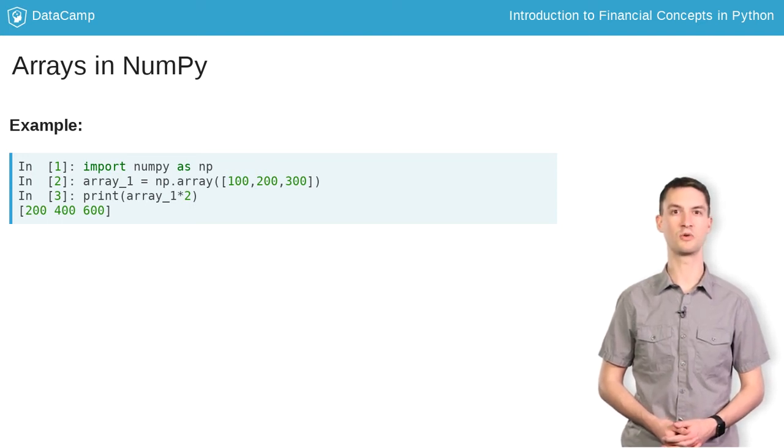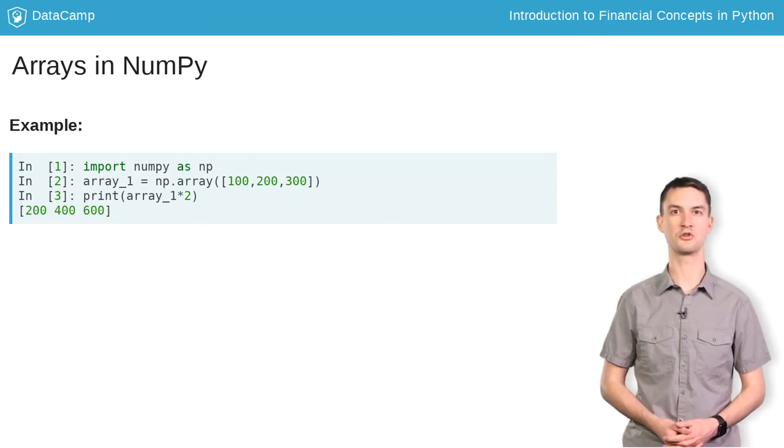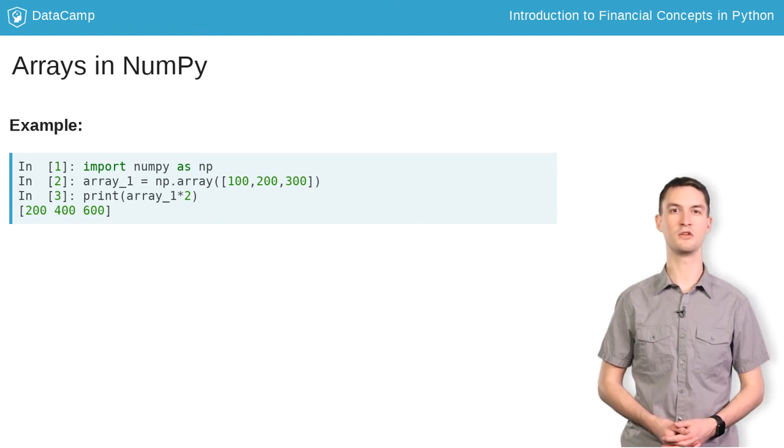In this example, we create a NumPy array object called array1 by first passing in a list of the values 100, 200, and 300. You can then multiply each of the elements in the array by 2 simply by performing the multiplication on the object itself, outputting the values 200, 400, and 600.